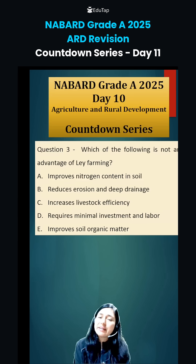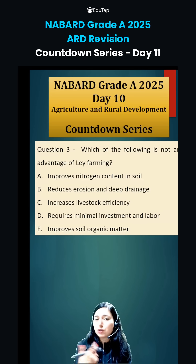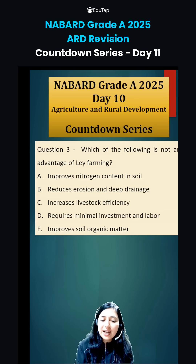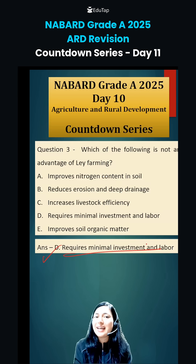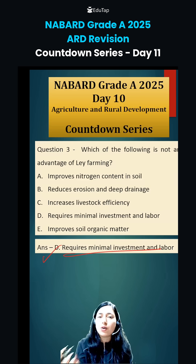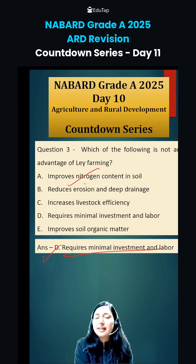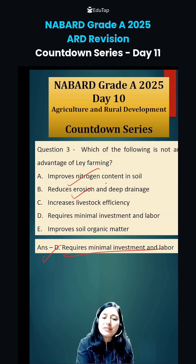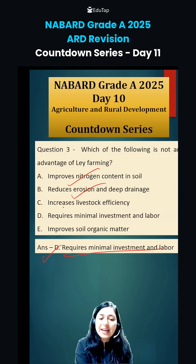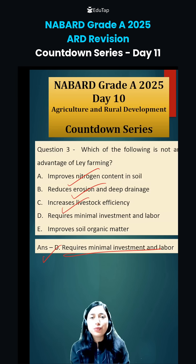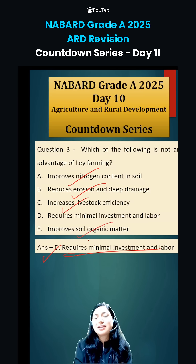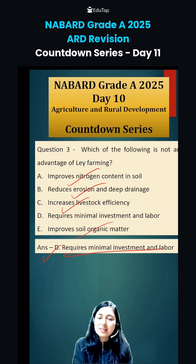Third question regarding the advantage of lay farming. The answer will be option D — 'requires minimal investment and labor' — this is NOT the advantage. The remaining options are advantages of lay farming: it improves nitrogen content in soil, reduces erosion and deep drainage, increases livestock efficiency, because whatever you grow as legumes you can use to feed your livestock, and it will ultimately increase soil organic matter.